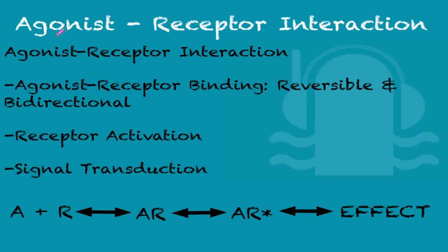On our first slide we're going to talk about agonist-receptor interaction. Basically, the agonist and the receptor bind together, which is reversible — so they can unbind — and bi-directional. So here you have the agonist plus the receptor, which is reversible and bi-directional, and it forms an agonist-receptor complex.